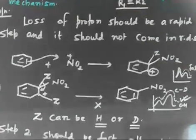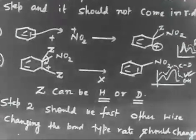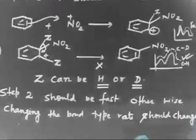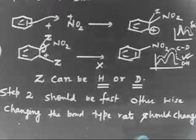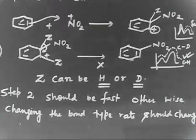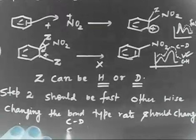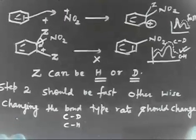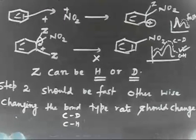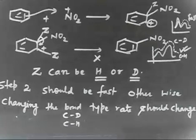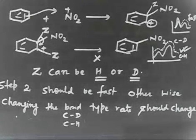Step two should be fast; otherwise changing the type of bond — carbon-deuterium or carbon-hydrogen — would change the rate, which is not what is observed. Therefore, the electrophile attack in step one is the rate-determining step.